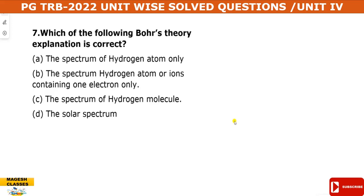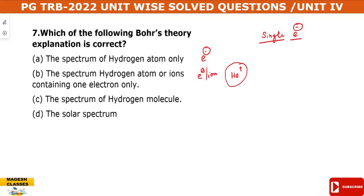The next question asks which statement about Bohr's theory is correct. In general, Bohr's theory explains the spectrum of single-electron systems — specifically the spectrum of hydrogen atom and ions containing a single electron, such as He⁺. It does not explain the spectrum of the hydrogen molecule, which has two electrons, nor is it related to the solar spectrum.